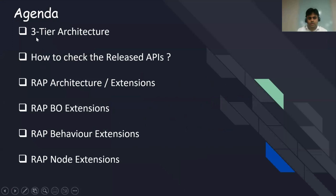Today I would be taking you through three-tier architecture, which serves as a basis for the RAP extensions. You could also see how to check the release APIs. Then we see the basic RAP architecture and extension possibilities. Then you'll see three demos on RAP business object extensions: how to add a custom field, how to extend a Fiori standard RAP-based app with a standard field, and the different ways to extend for managed and unmanaged scenarios.